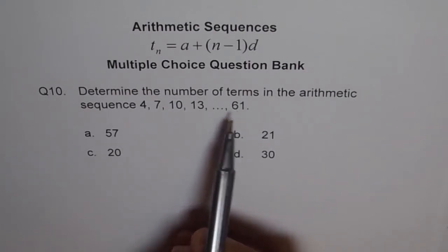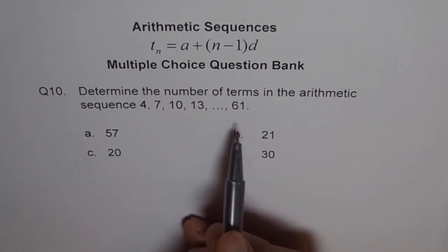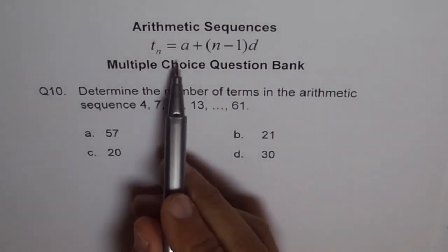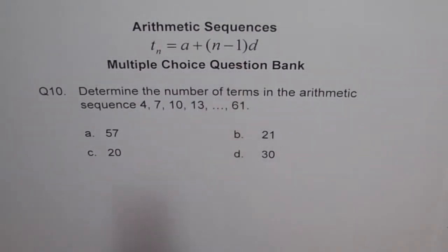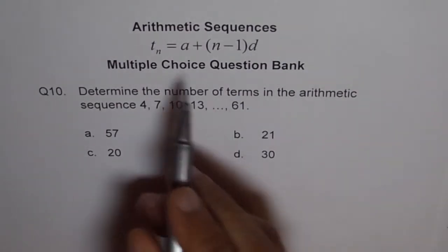Once we know the term number, Tn, then we know how many terms are there. So let's use the formula Tn equals a plus n minus 1 times d and figure out what is n. So we'll use this formula.